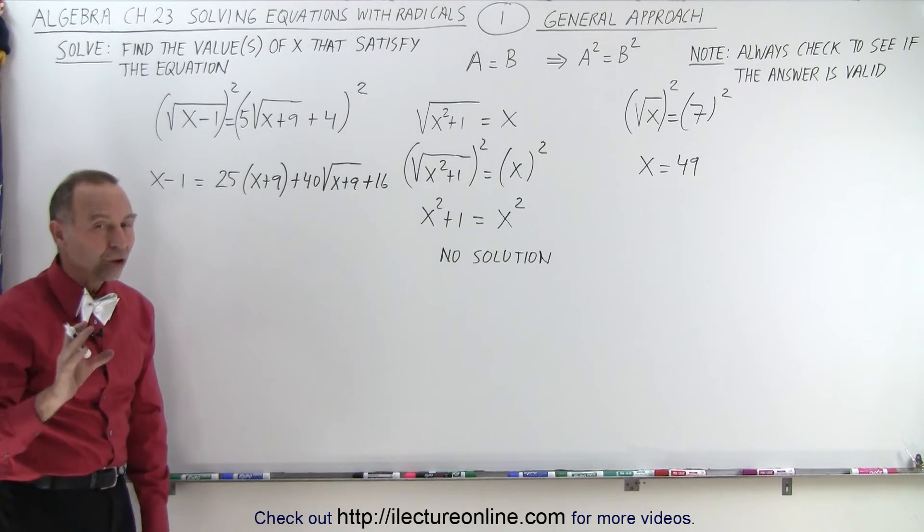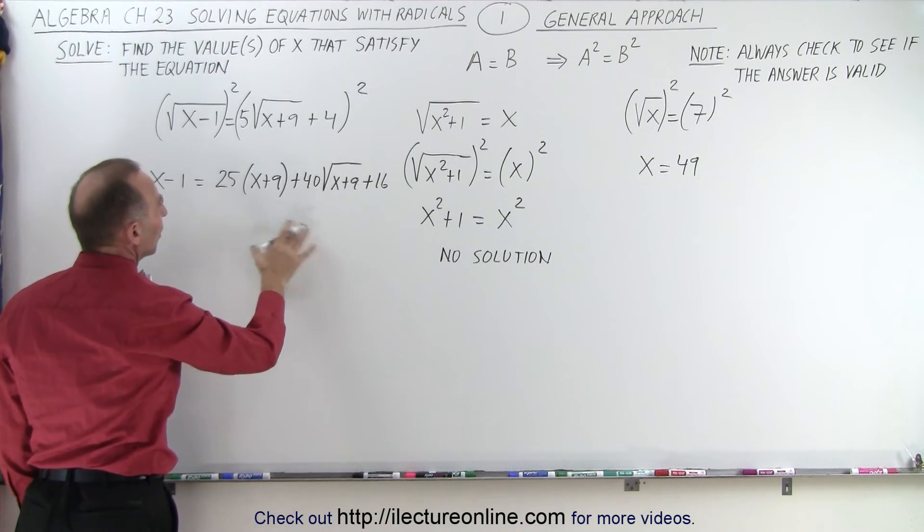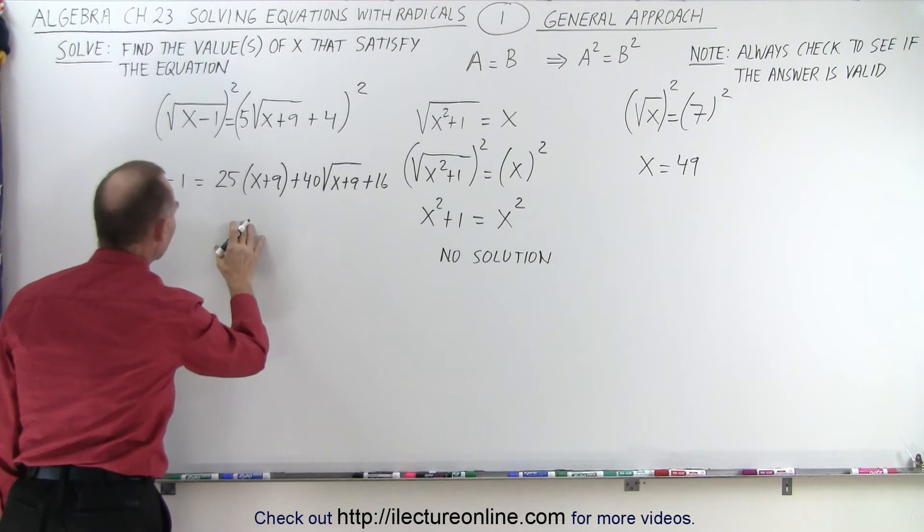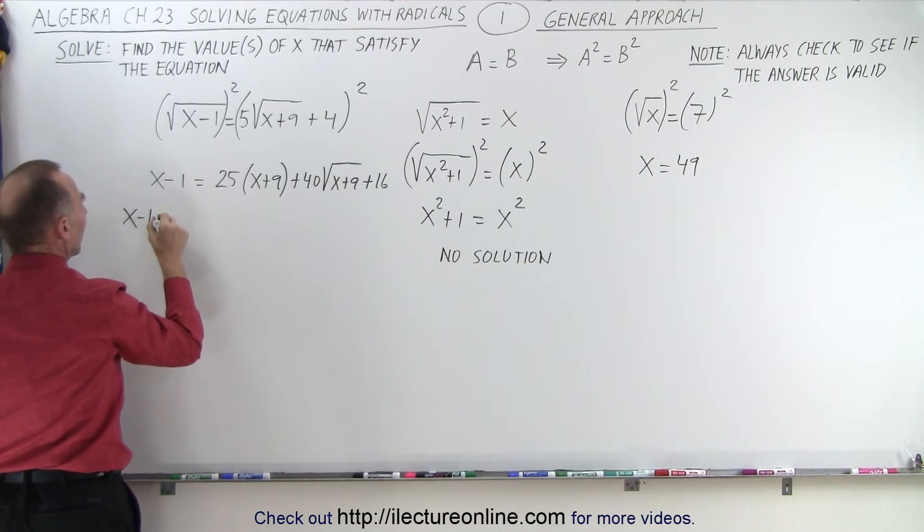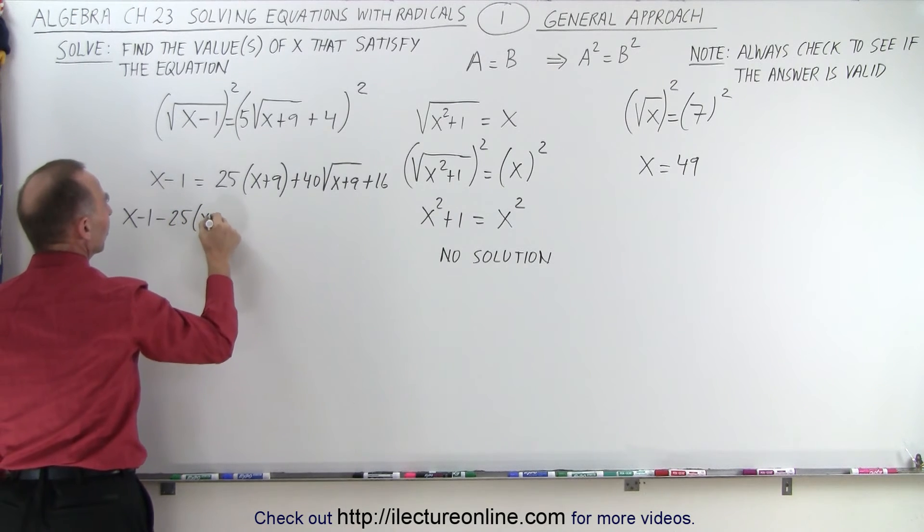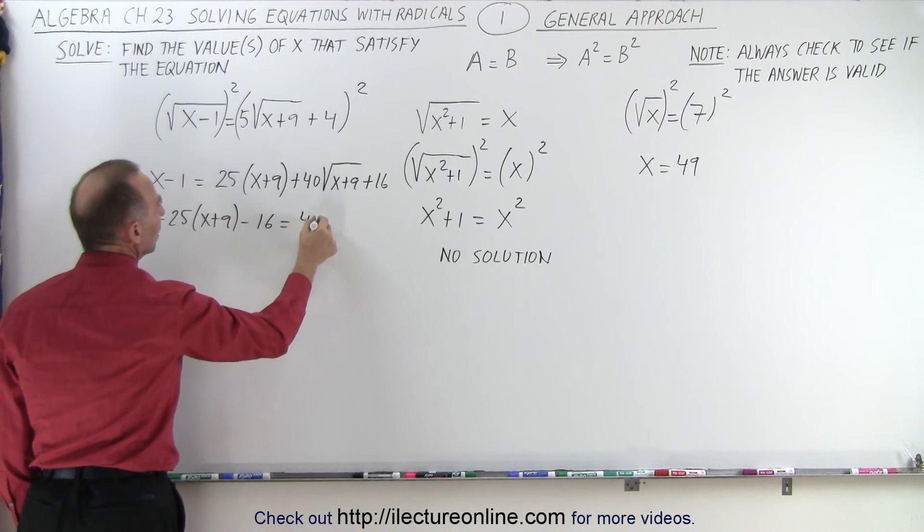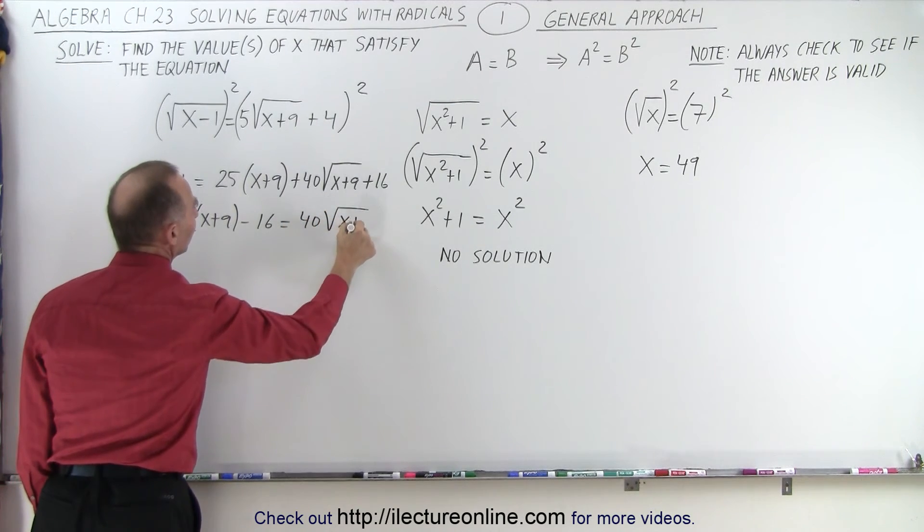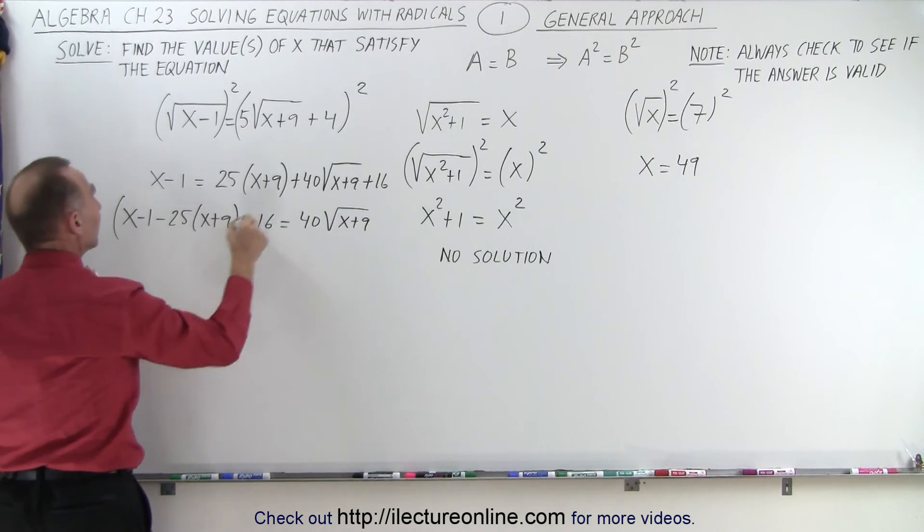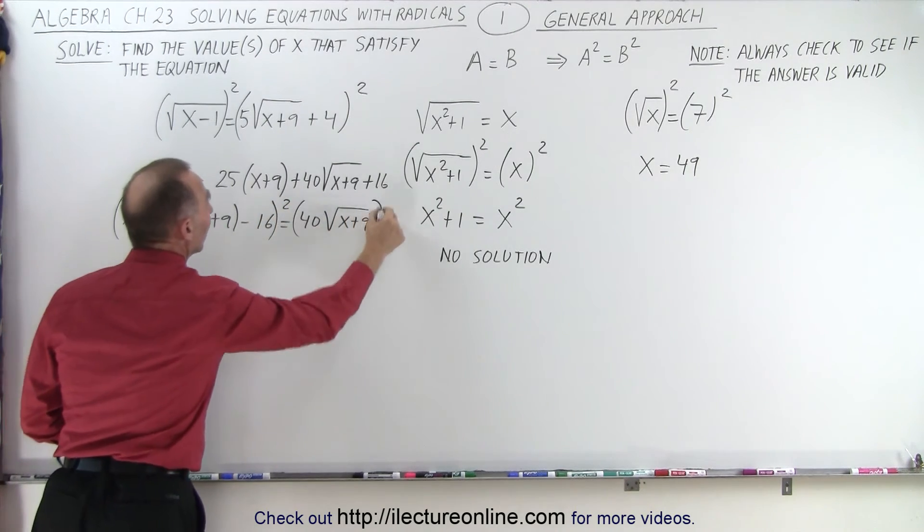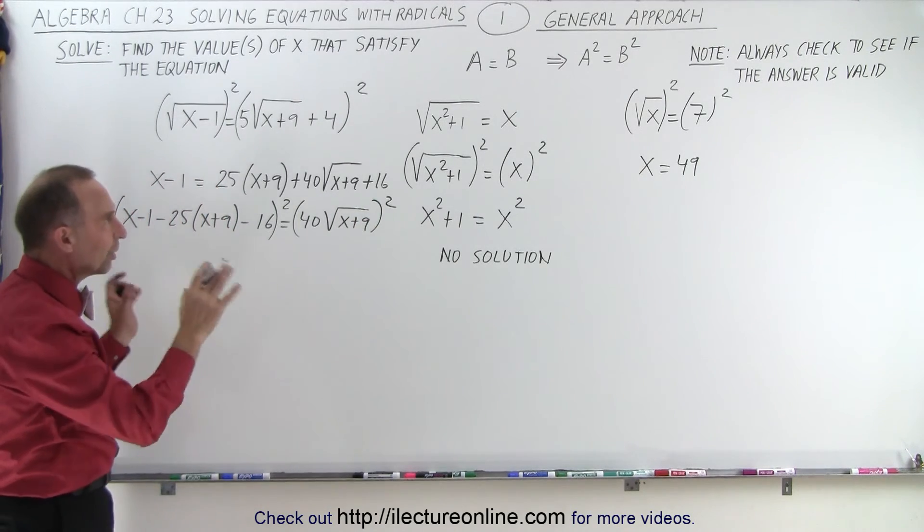Notice we have just one radical left. Typically when you do this, we end up with one radical left, which means we want to separate that radical from everything else. We move everything to the left side: x - 1 - 25(x + 9) - 16 equals 40√(x + 9). Once we have the radical isolated, we square both sides again, and now we get rid of all the radicals.